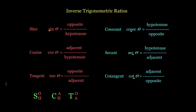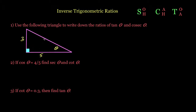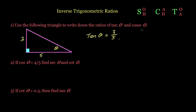For our first question: use the following triangle to write down the ratios of tan theta and cosec theta. We know tan theta uses TOA — opposite over adjacent. Looking at theta, the opposite side is 3 and the adjacent side is 5, so tan theta is 3 over 5. To get cosec theta, we look at the third letter 'S', which tells us it's related to sine.